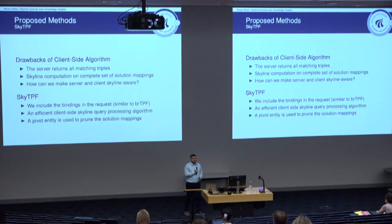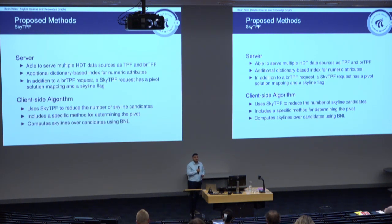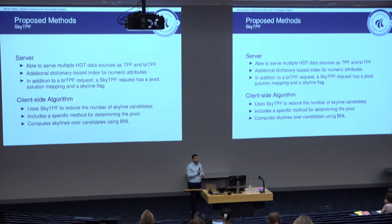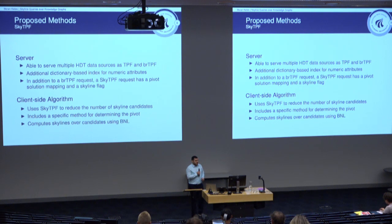SkyTPF includes bindings in the request just like BRTPF. We propose an efficient client-side query processing algorithm that uses a pivot entity to prune solution mappings. The SkyTPF server is able to serve multiple HTTP data sources just like TPF and BRTPF. We have an additional dictionary-based index for numeric attributes to get the rank of an object with respect to a predicate. In addition to a BRTPF request, we have a pivot solution mapping and a skyline flag — if the skyline flag is not set, it is equivalent to a BRTPF request.